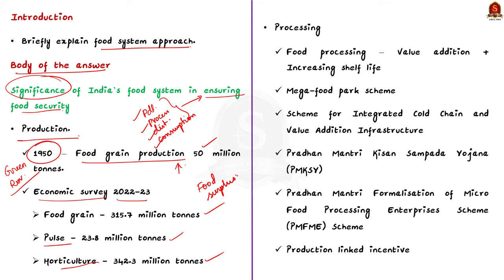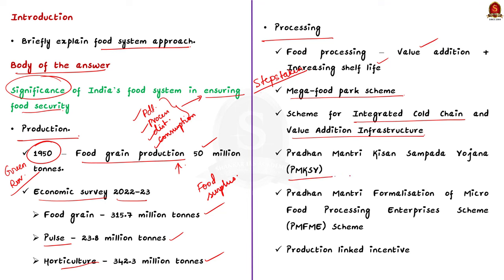Coming to the processing aspect — food processing is mainly done as value addition and to increase the shelf life of food. You can mention the creation of a separate ministry for food processing, and programs like Maha Food Park Scheme, Scheme for Integrated Cold Chain and Value Addition Infrastructure, Pradhan Mantri Kisan Sampadha Yojana, PM Formalization of Micro Food Processing Enterprises Scheme, and PLI to the Food Processing Sector. These efforts increase shelf life and improve farmer income through value addition, thus helping ensure food security.